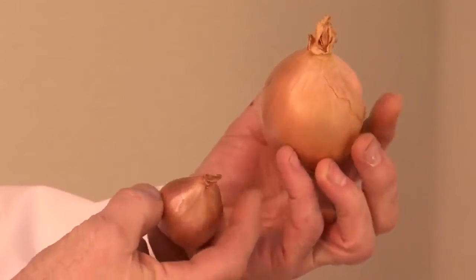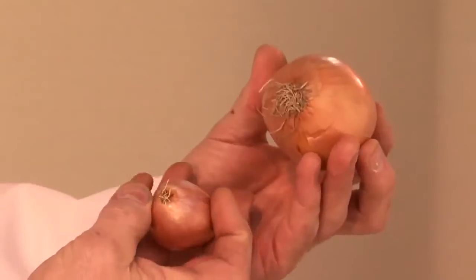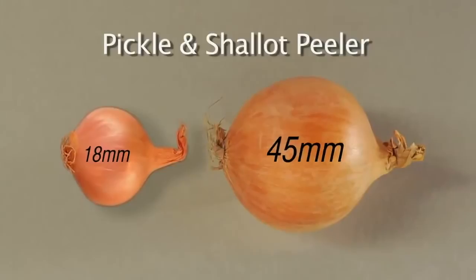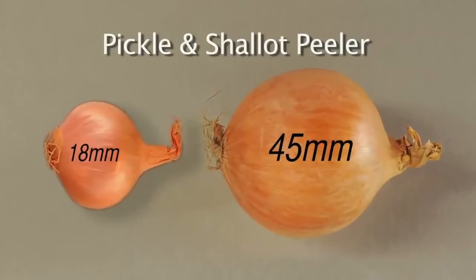Smaller pickling shallot onions also need to be peeled for food industry purposes, and we also manufacture a machine for 18mm to 45mm diameter onions with this process in mind. The operating principle is the same, just on a smaller scale.